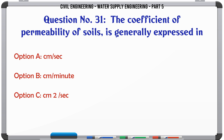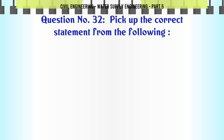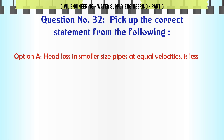The coefficient of permeability of soils is generally expressed in: A. cm/sec, B. cm/min, C. cm²/sec, D. cm²/min. The correct answer is cm/sec.